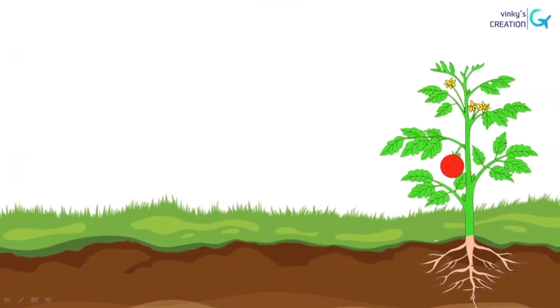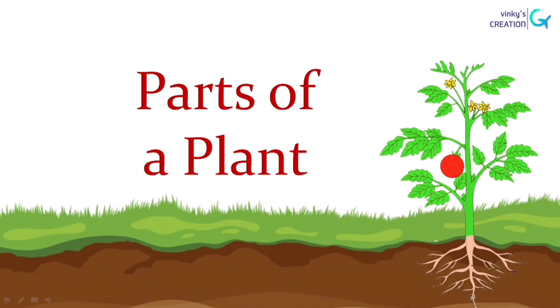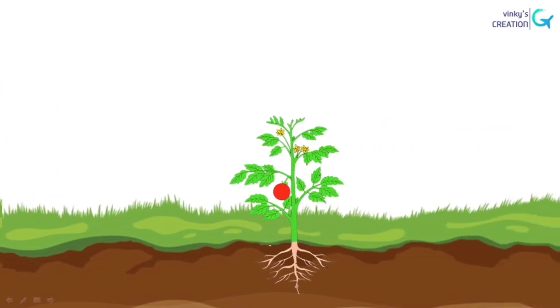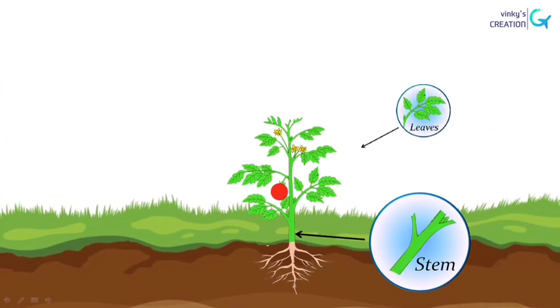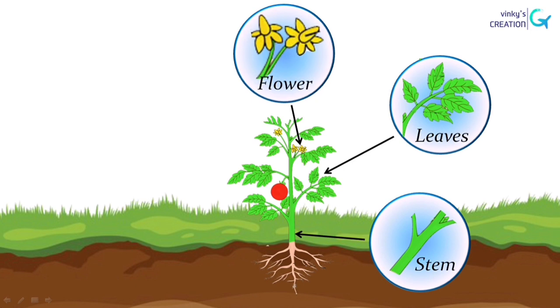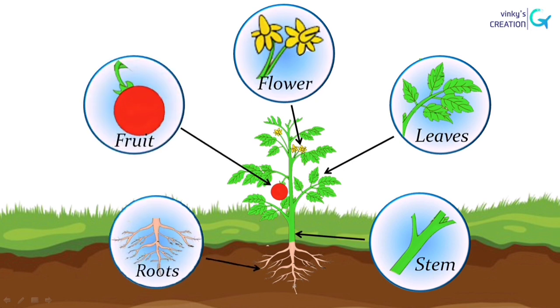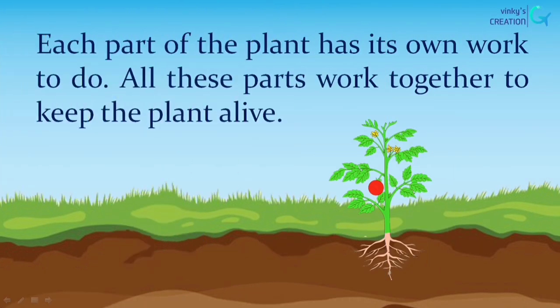Now let's learn about different parts of a plant. Plants have mainly five parts: stem, leaves, flower, fruit, and roots. Each part of the plant has its own work to do, and all these parts work together to keep the plant alive.